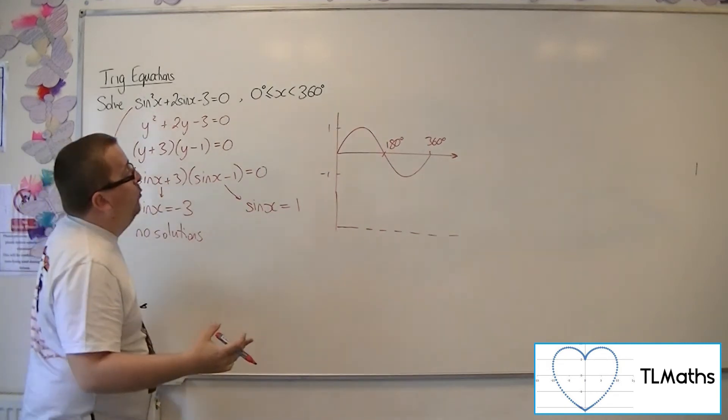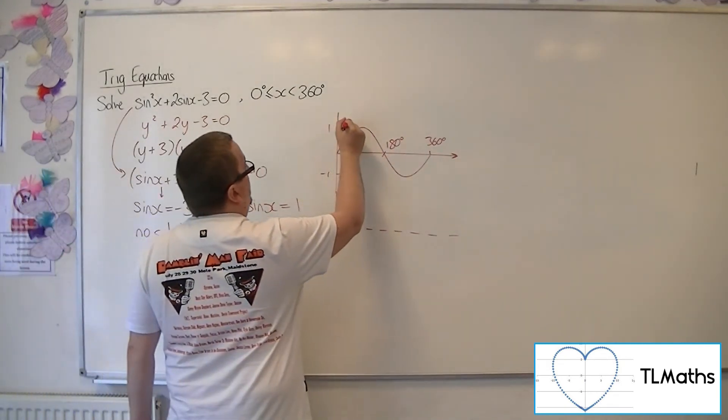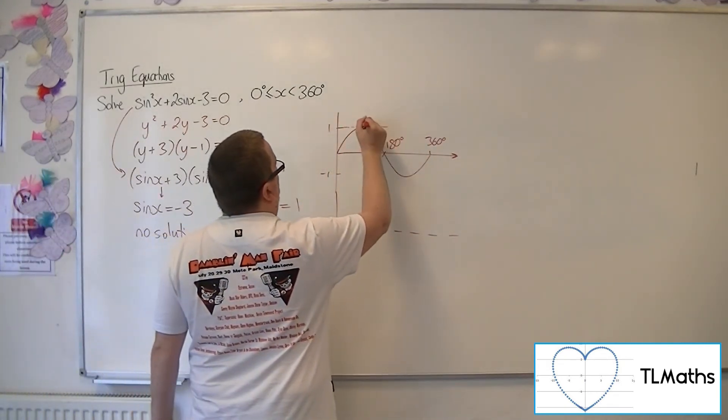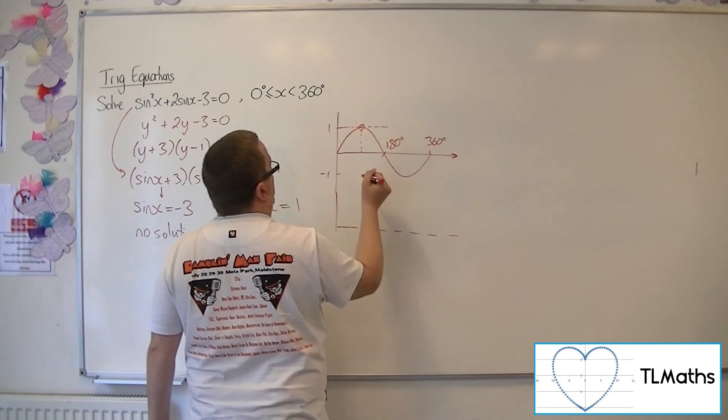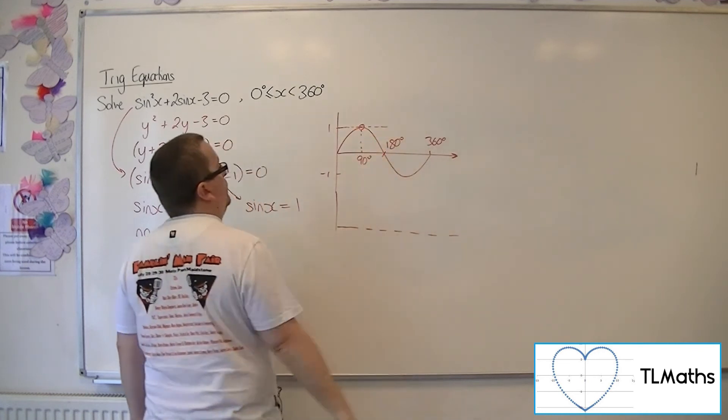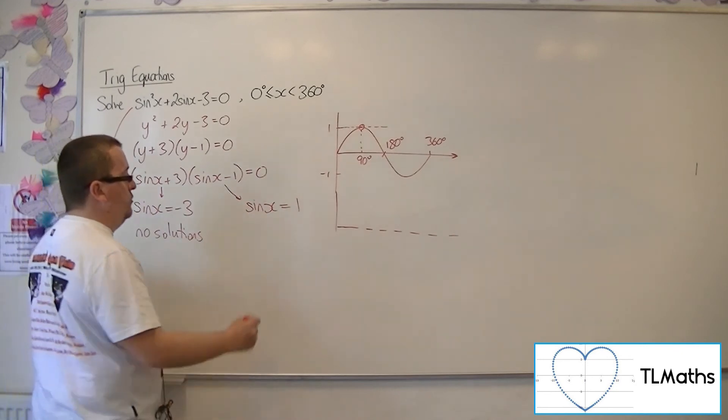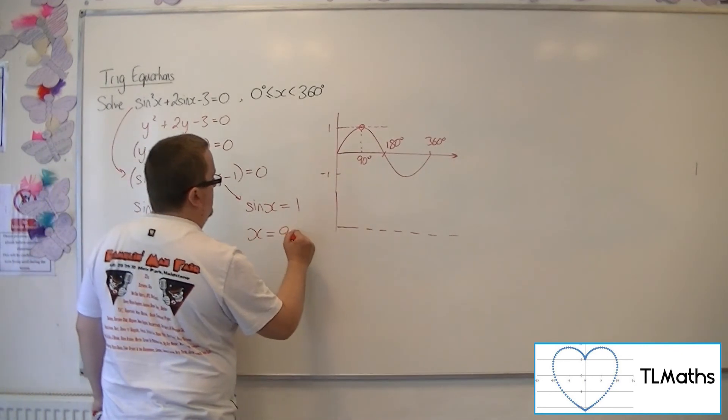Now, for sine x equals 1, well, 1's up here, and it's going to touch the curve once, and that top bit there, which is halfway between 0 and 180, so that's at 90 degrees. So x is 90 degrees.